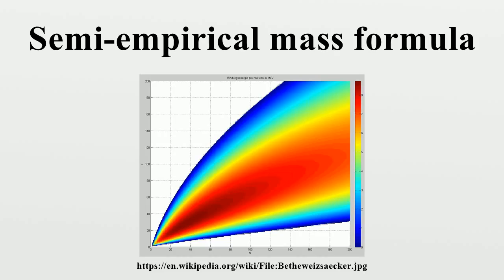If the volume of the nucleus is proportional to A, then the radius should be proportional to A^(1/3) and the surface area to A^(2/3). This explains why the surface term is proportional to A^(2/3). It can also be deduced that aS should have a similar order of magnitude as aV.